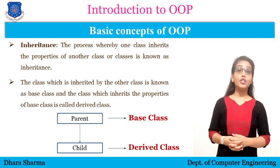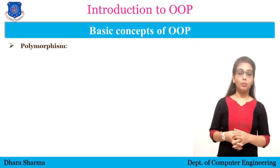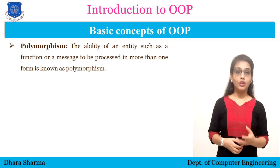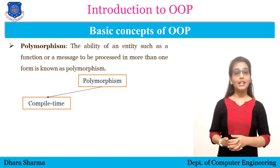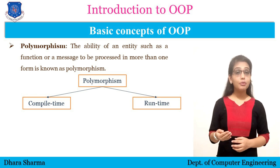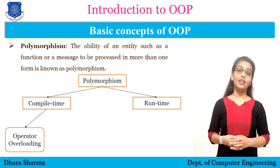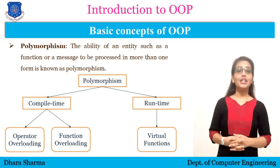Now let's understand what is polymorphism. In general terms, polymorphism means many forms — a same thing can be used for different purposes. There are two types of polymorphism: compile time and run time. There are two types of compile time polymorphism: operator overloading and function overloading. Virtual function is a type of run time polymorphism.